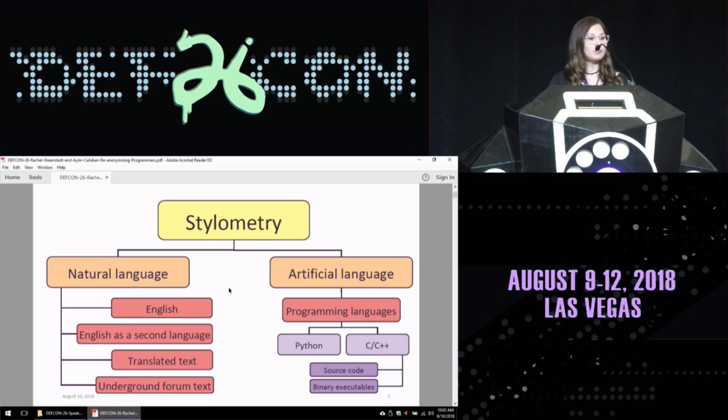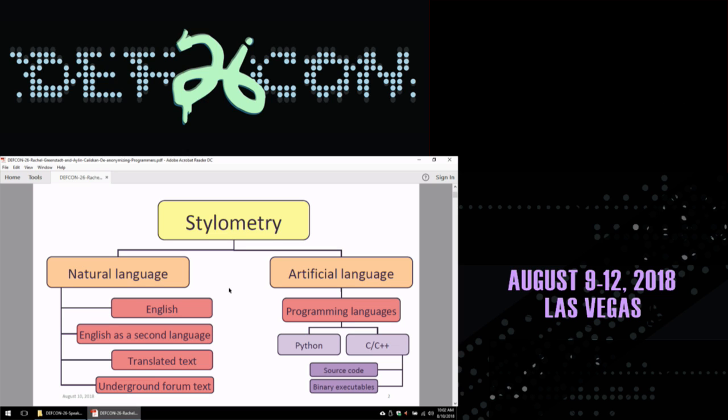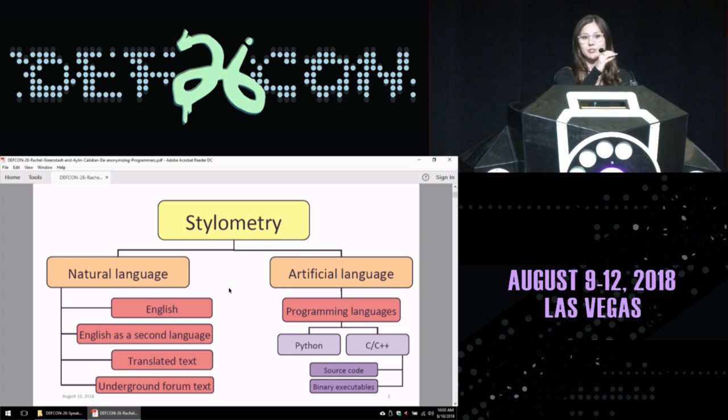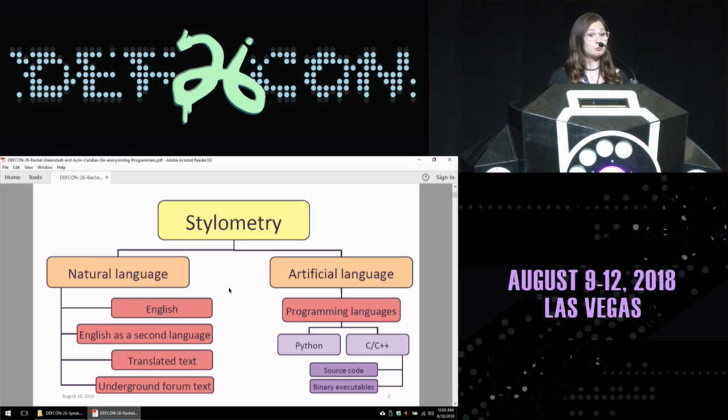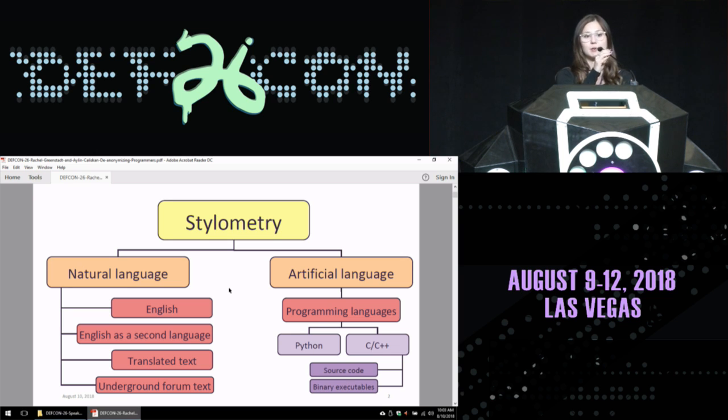Stylometry is the study of style in language. When we say language, we mostly think about natural language, like English that we speak, but there are also artificial languages like programming languages. On the natural language side, we've been looking at English or English as a second language to identify the native language of a speaker, or translated text, as well as underground forum texts where users engage in business transactions, and we are still able to identify the authors from their messages.